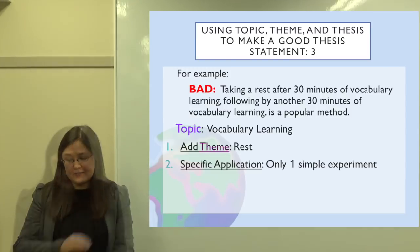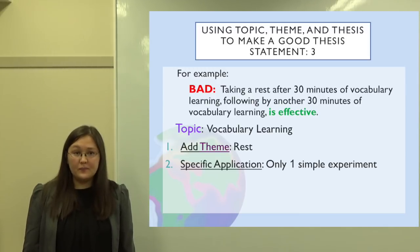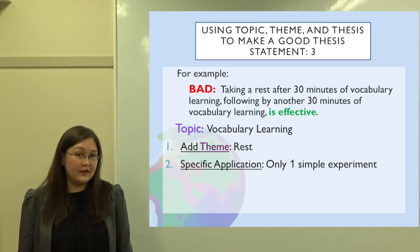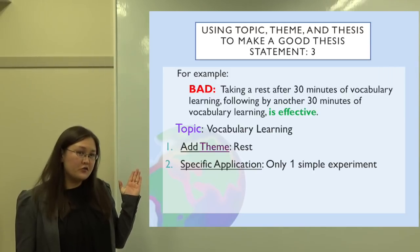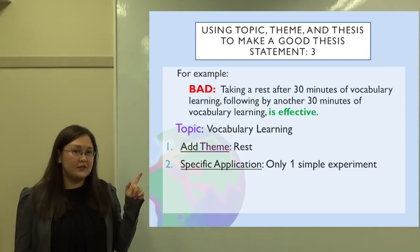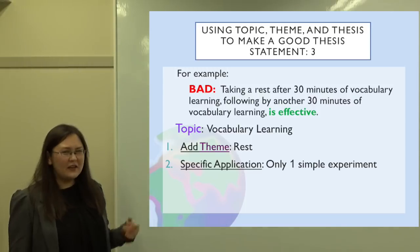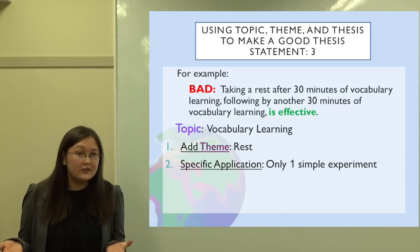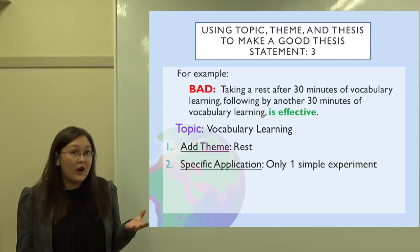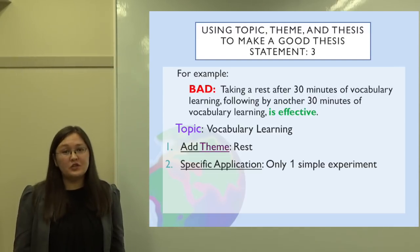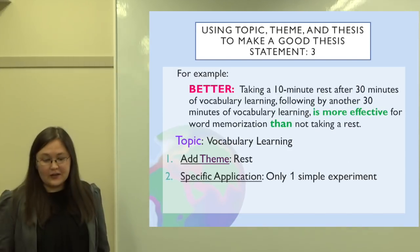Let's look at another example: 'Taking a rest after 30 minutes of vocabulary learning, followed by another 30 minutes of vocabulary learning, is effective.' Well, this is not just a mere fact — this does show the author's opinion. The author believes this is effective. So 'is effective' is better than the previous example. But effective for what? How do you know it's effective? There's no argument, no data — just 'it's effective.' But how? Why? That information is not in the thesis statement. So this is not good as a thesis statement.